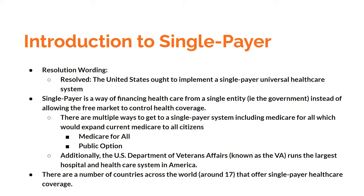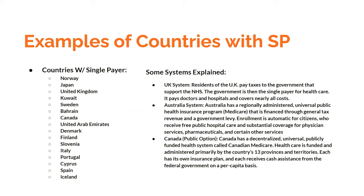Globally, a number of countries offer single payer healthcare coverage. The US is considered one of the only fully developed and wealthy countries that does not have a single payer system or guaranteed universal insurance coverage — which is one of the bigger debates about the US's international standing. I've put together a graphic of countries with single payer systems and some of their models explained.